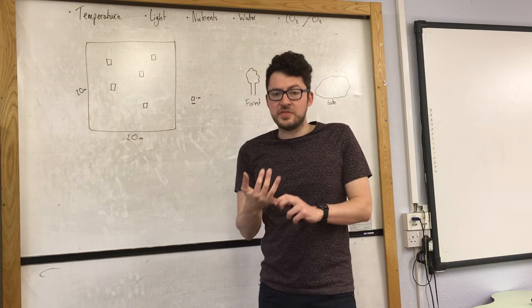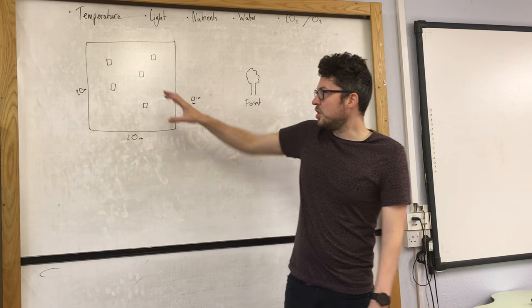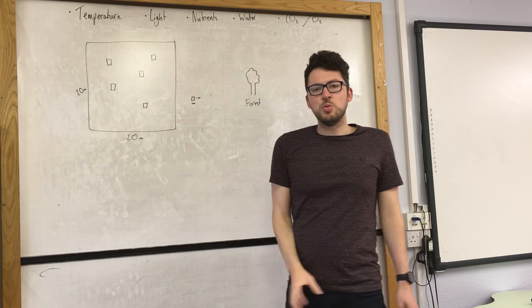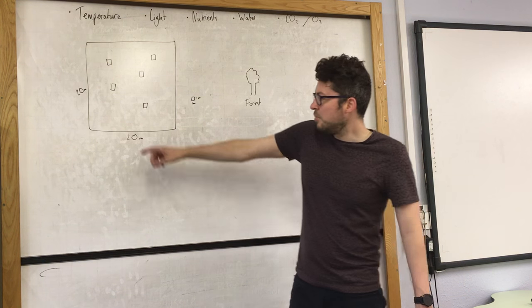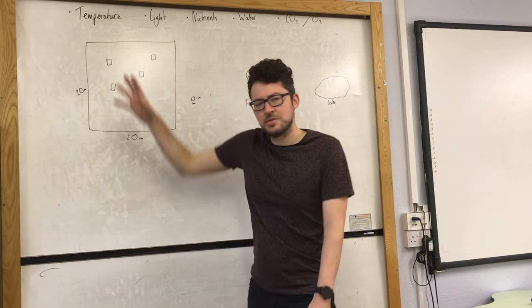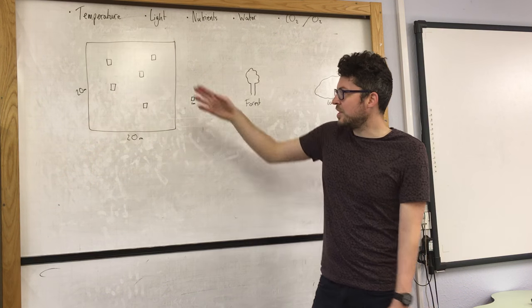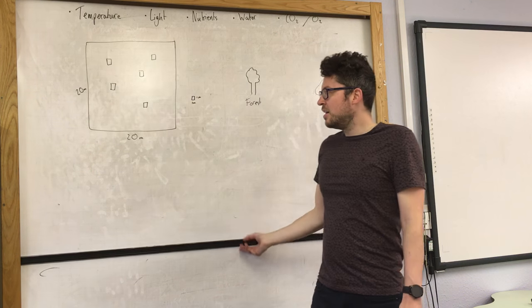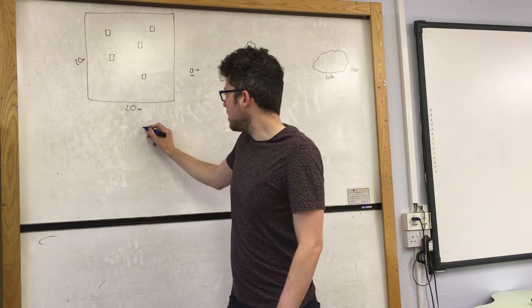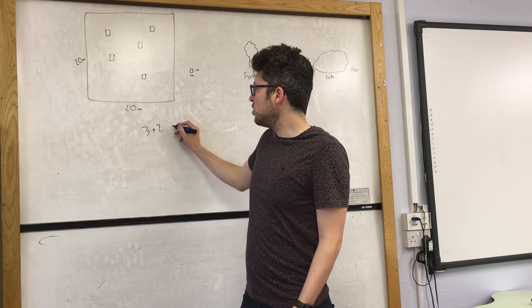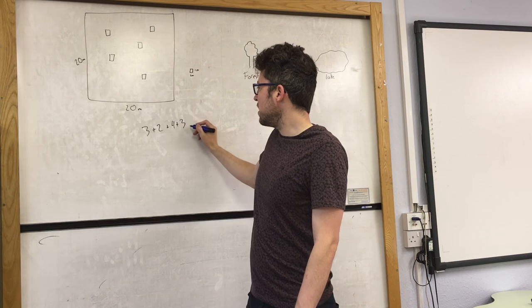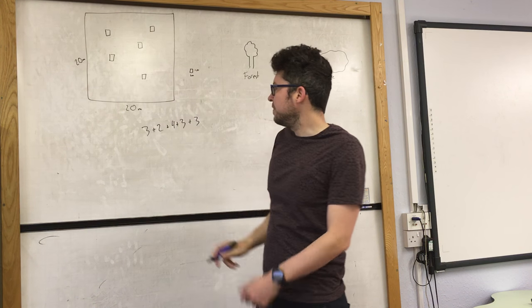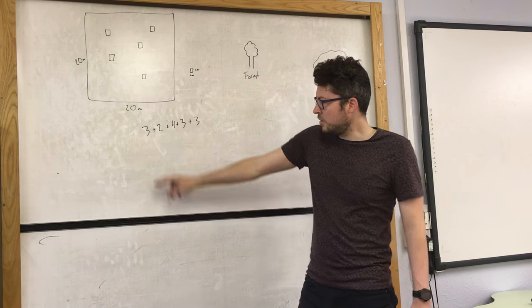So what we do, this is used for sampling plants. So what we would do is we'd count the number in each one. So let's say I'm trying to find out the number of daisies in this field. But obviously it would be a massive job to count the number in the whole field. So what I do is I count the number in each of my squares. So let's say I have had three plus two plus four plus three plus three.